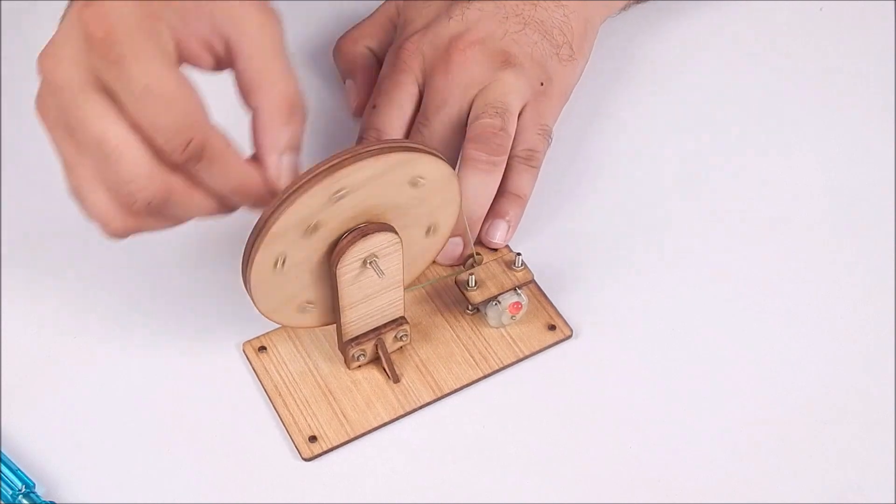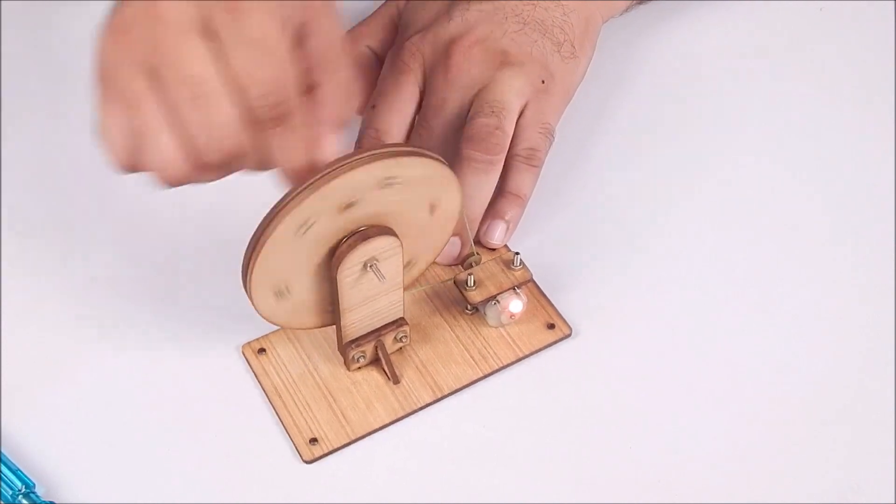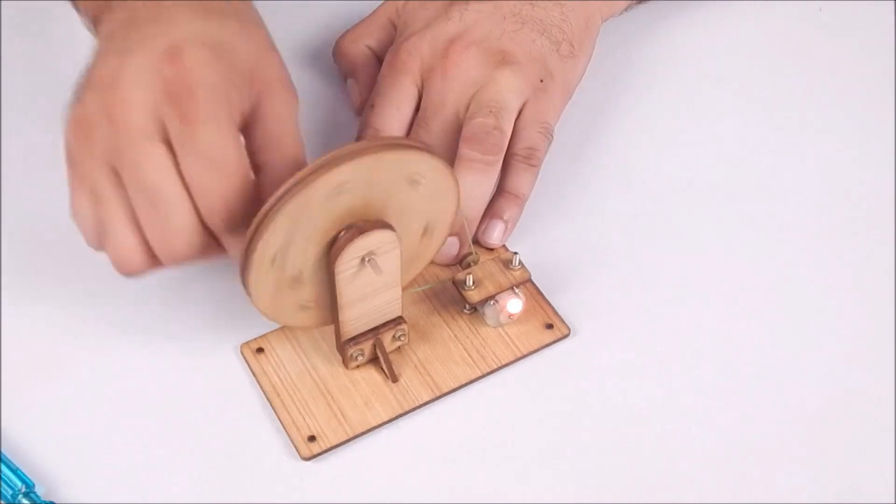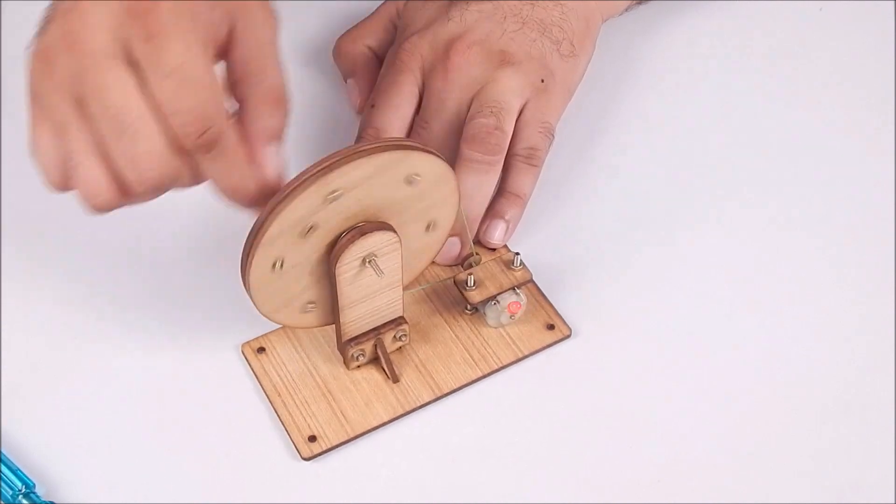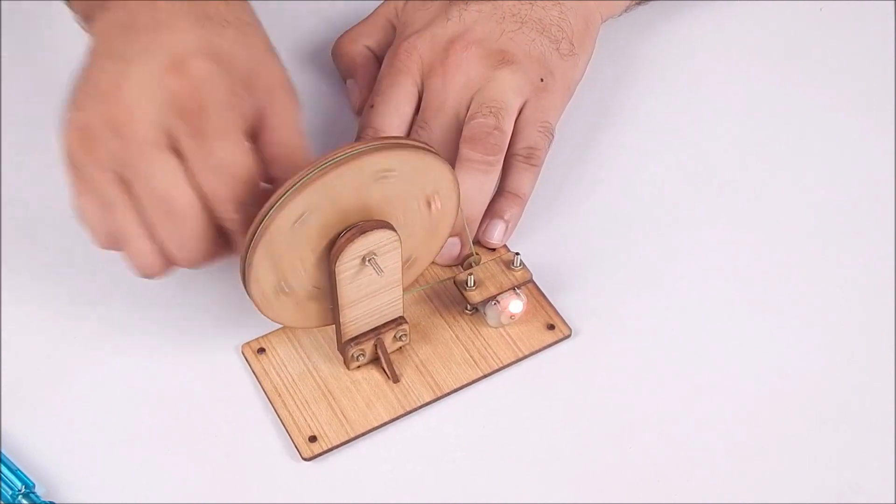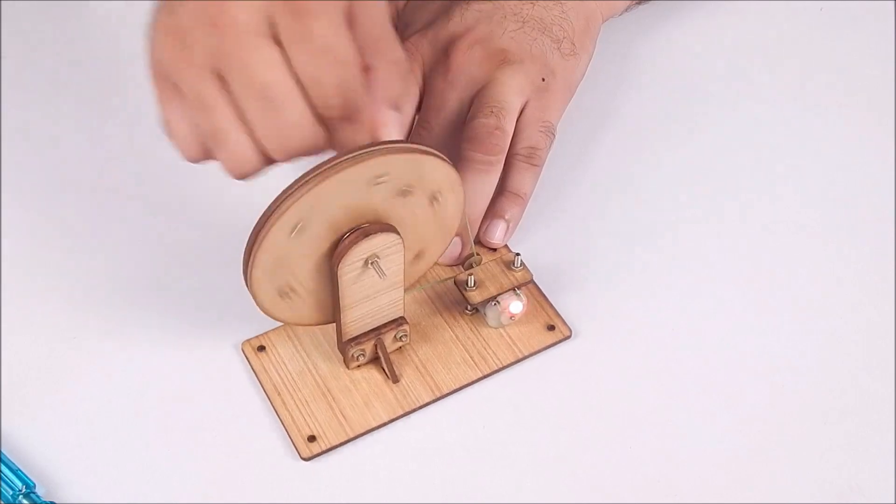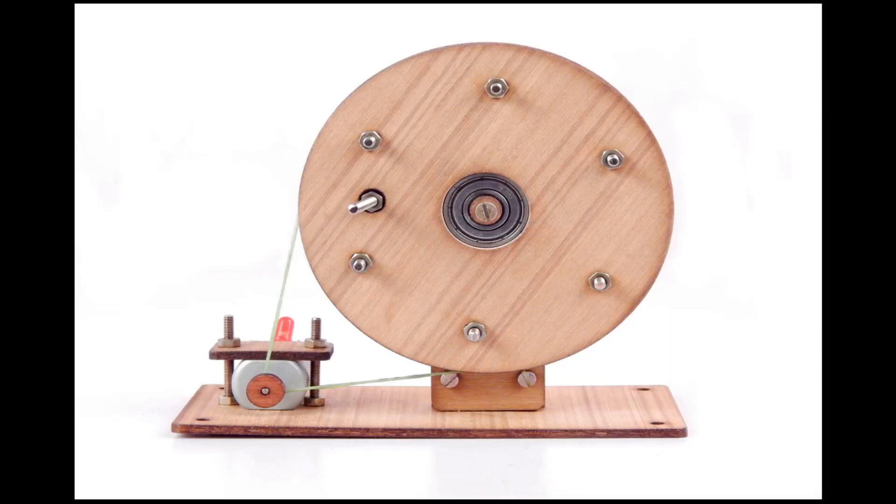Now rotate the wheel with a moderate speed and you will see the LED will glow with the manual power supplied by your hand. Congratulations! You have created a power generator.